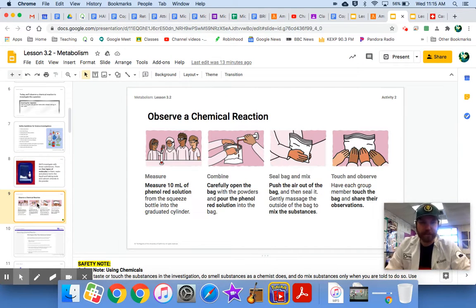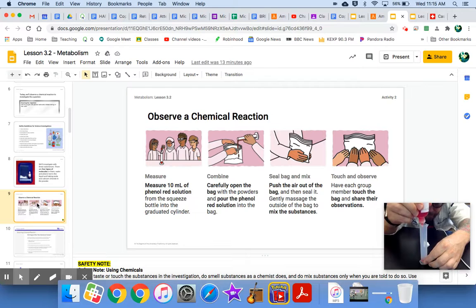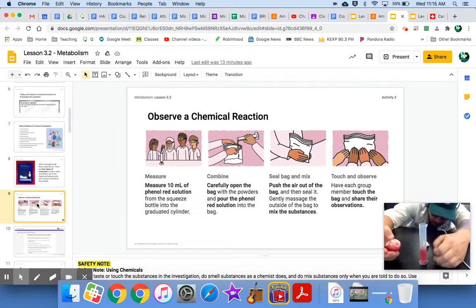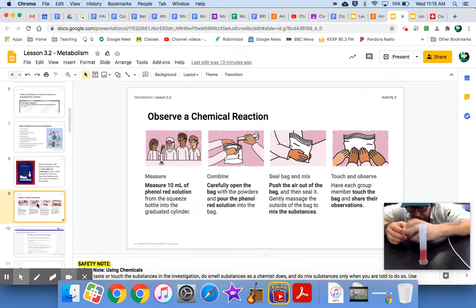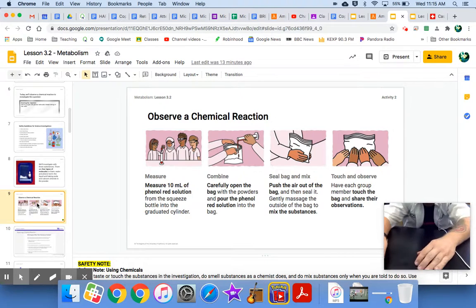So here's our procedures right here. Measure 10 milliliters of phenyl red solution from the squeeze bottle into the graduated cylinder. I'm going to do that with you right now. Let me don my safety glasses. Here's my graduated cylinder. Let's get 10 milliliters of phenyl red in there. I have exactly 10 milliliters of phenyl red in my graduated cylinder. I know it went up to the 10 milliliter line and I have my graduated cylinder on a flat surface and I'm measuring it at eye level. Great. Awesome.